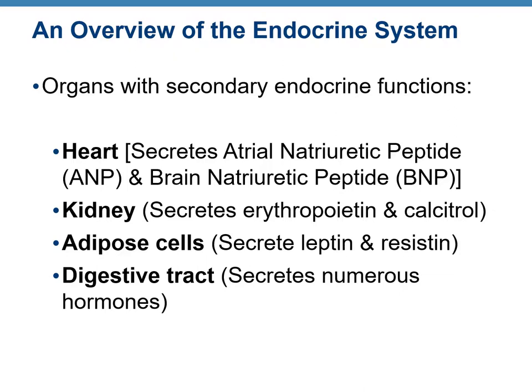Some other organs with secondary endocrine functions are the heart, which secretes two hormones; the kidney, which secretes erythropoietin and calcitonin; fat or adipose cells, which secrete leptin and resistin; and the digestive tract, which secretes numerous hormones. These organs have their own primary functions different from hormone secretion, so hormone secretion is their secondary function.